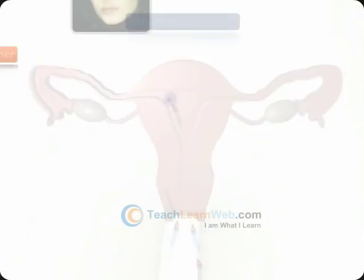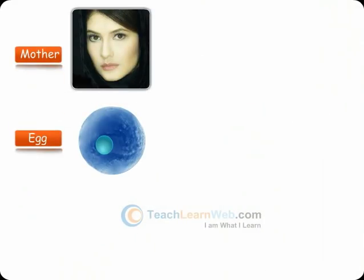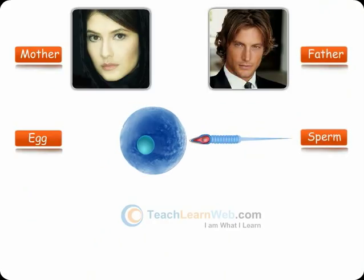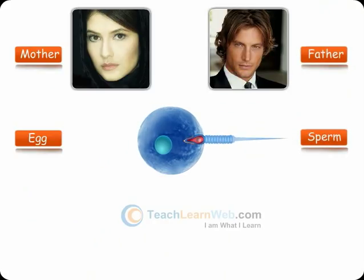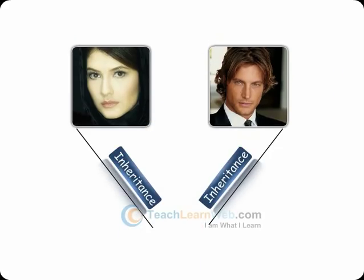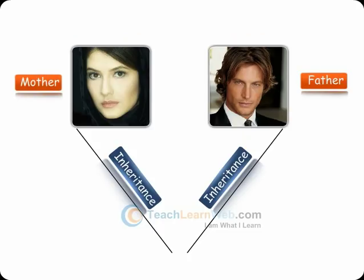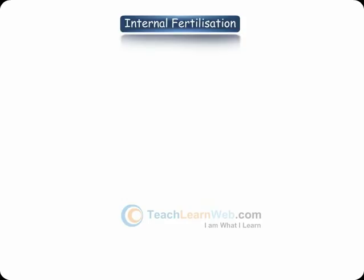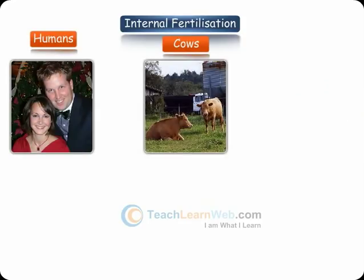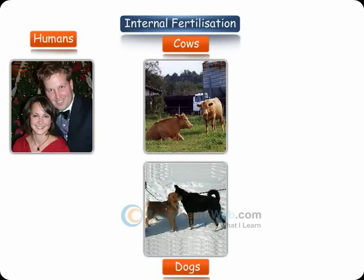As the egg is produced by the mother and the sperm is produced by the father, both of them fuse to form a new individual — the zygote — and it inherits its characteristics both from its father and mother. Internal fertilization is seen in humans, cows, dogs, and hens.